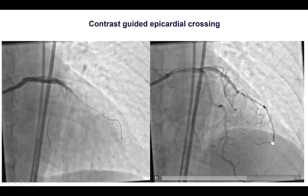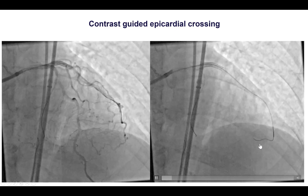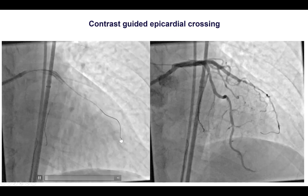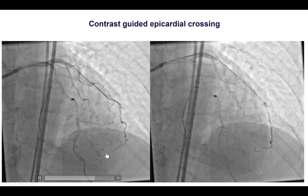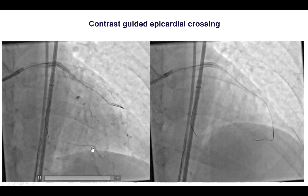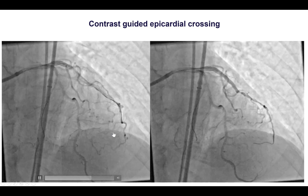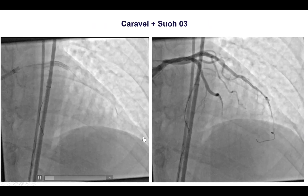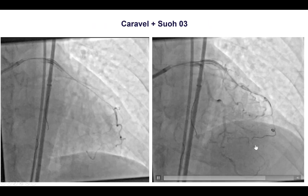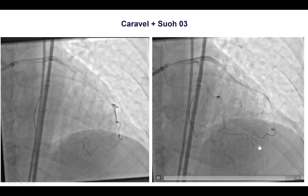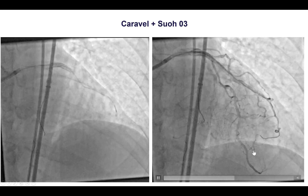We inserted the Caravelle microcatheter and a SUO O3 guide wire. As you can see, it's a very tortuous collateral with multiple bends, although it wasn't quite as bad as the epicardial coming from the acute marginal from the right. The SUO O3 wire took the first bend, but then had quite significant difficulty negotiating the second set of bends.